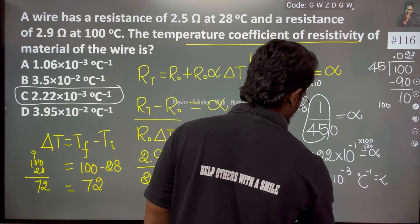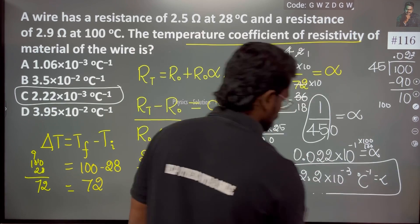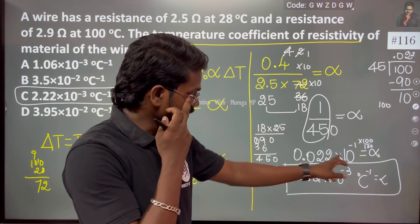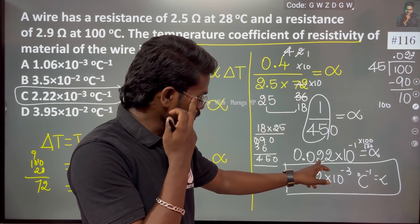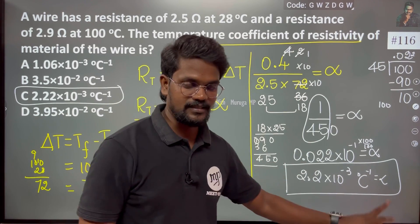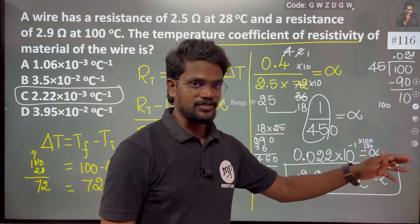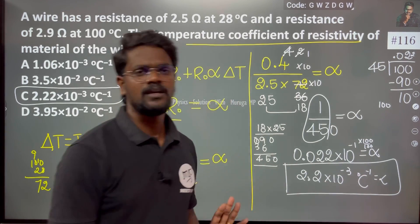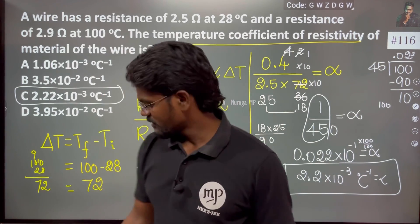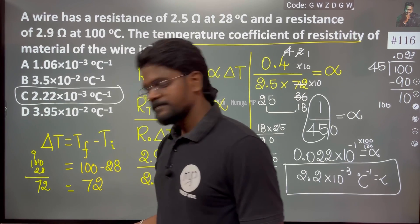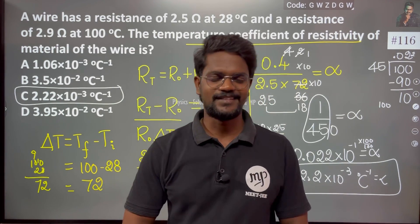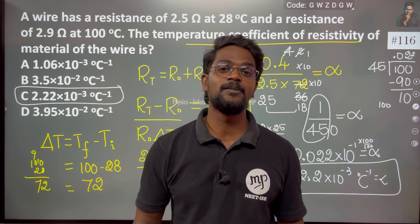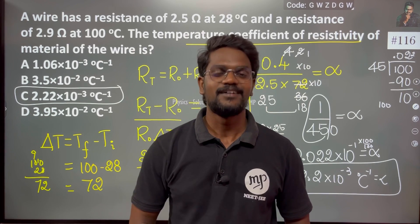Alpha equals 2.28 times 10 to the power minus 3, which is the temperature coefficient of resistivity, in units of per degree Celsius.